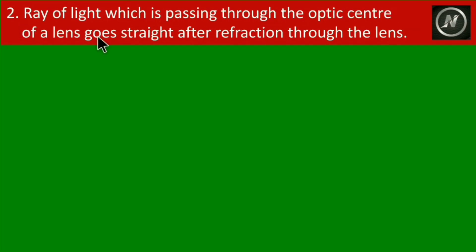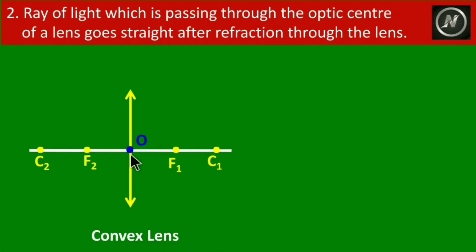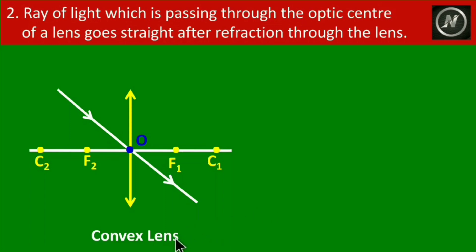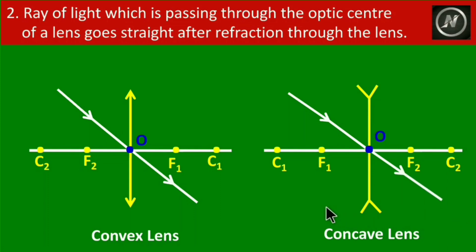Rule two: A ray of light which is passing through the optic center of a lens goes straight after refraction through the lens, without any deviation. This is applicable to both convex and concave lenses. These two rules are the same for both types of lenses.